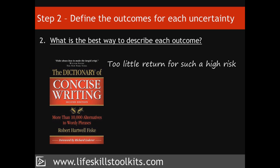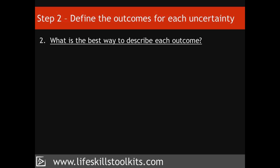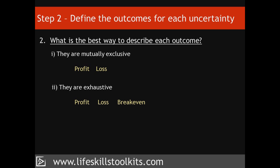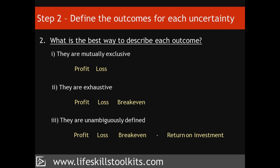Sometimes describing an outcome might involve writing a description as well. Wherever possible, keep your list of outcomes short to avoid complexity – in some situations you need only consider low and high returns. Whatever your outcomes, make sure they fulfil three requirements: they're mutually exclusive, meaning each outcome differs from the others; they're exhaustive, covering all eventualities such as profit, loss or breakeven; and they're unambiguously defined, so that you're clear which outcome is assigned to which uncertainty – for example, profit, loss or breakeven assigned to the uncertainty of return on investment, compared to the uncertainty of a good rate of interest from a deposit account.